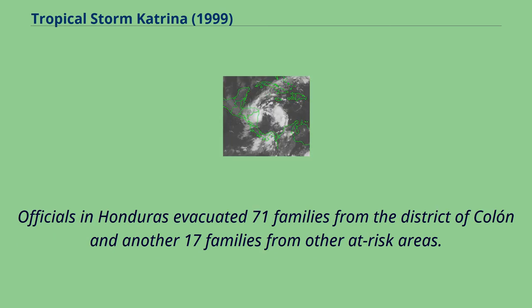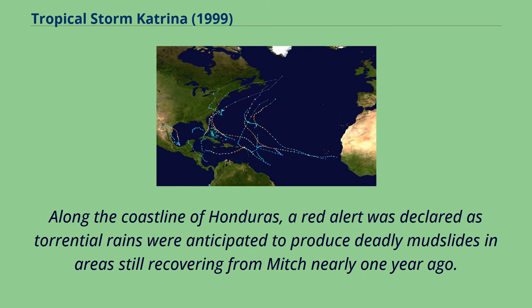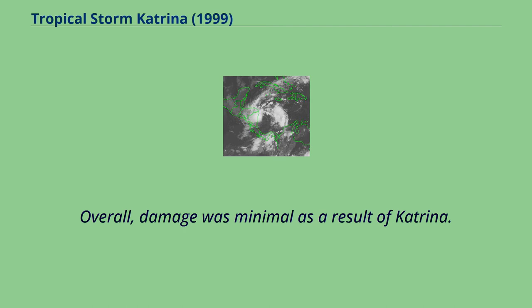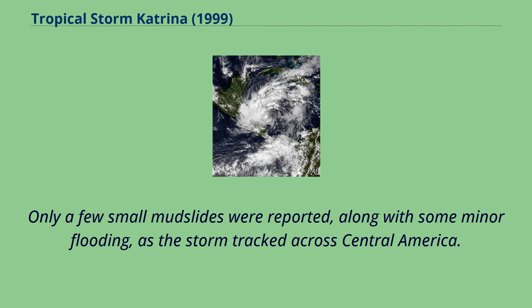Officials in Honduras evacuated 71 families from the district of Cologne and another 17 families from other at-risk areas. Along the coastline of Honduras, a red alert was declared as torrential rains were anticipated to produce deadly mudslides in areas still recovering from Mitch nearly one year ago. Overall, damage was minimal as a result of Katrina. Only a few small mudslides were reported, along with some minor flooding, as the storm tracked across Central America.